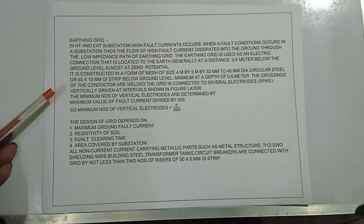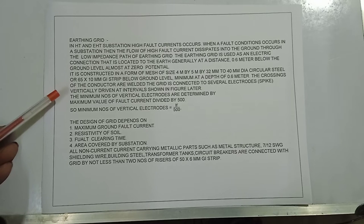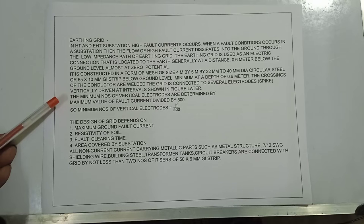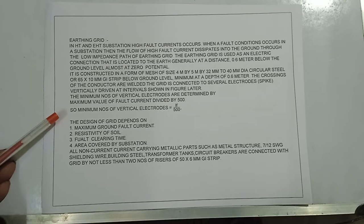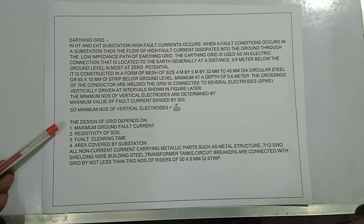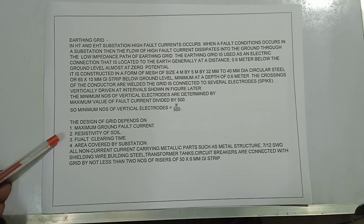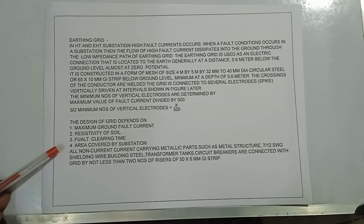The grid is connected to several electrodes spiked vertically at intervals. The minimum number of vertical electrodes is determined by: minimum electrodes = If / 500. The design of the grid depends on: (1) maximum ground fault current, (2) resistivity of soil, (3) fault clearing time, and (4) area covered by the substation.